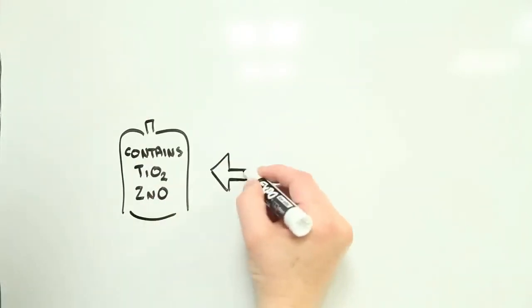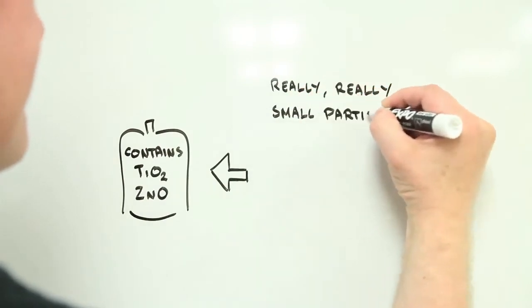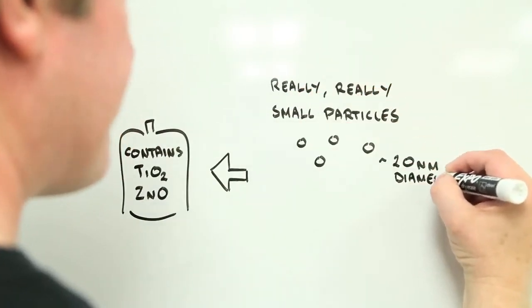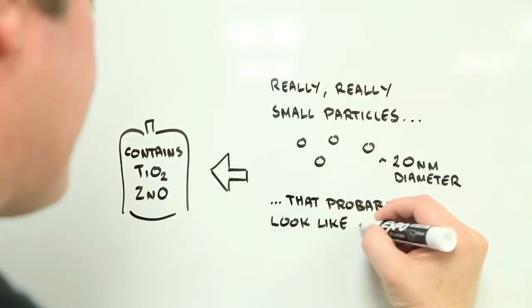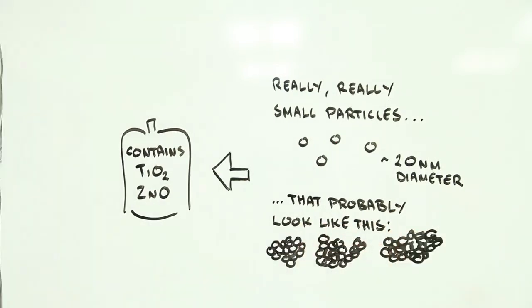Nanoparticle sunscreens use microscopically small particles of zinc oxide or titanium dioxide. You can usually tell if a sunscreen uses nanoparticles because it lists one or both of these materials on the label.